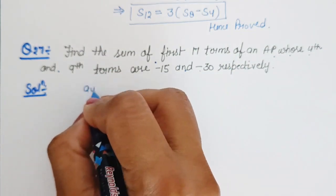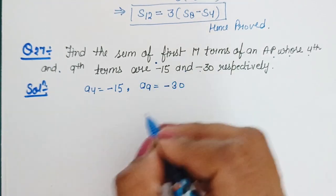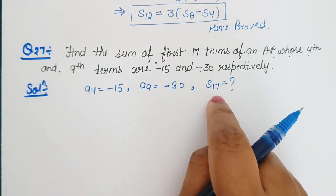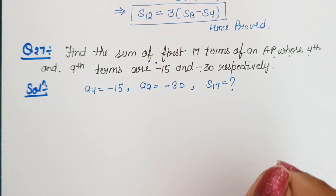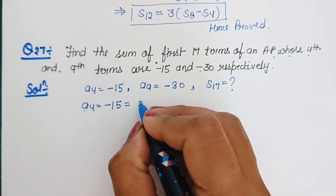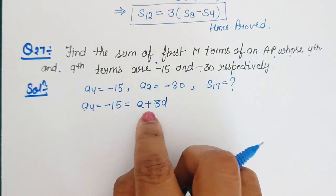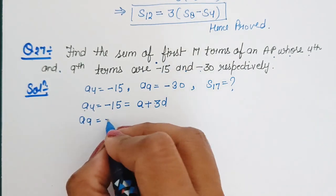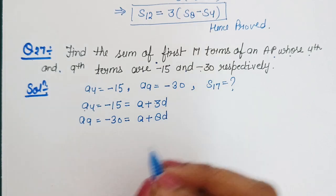Yahan pe A4 ki value humein given hai, that is minus 15, and A9 ki value given hai, that is minus 30. Toh A4 ko hum likh sakte hain A plus 3D, jo ki minus 15 ke barabar hai. Aur A9 ko hum likh sakte hain A plus 8D.